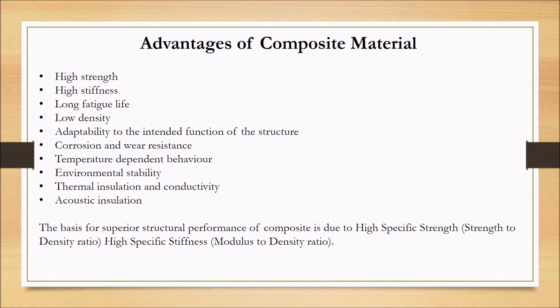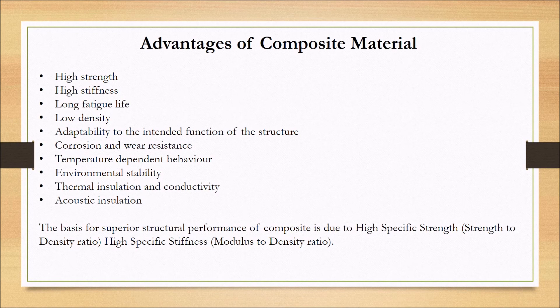Now let us see the advantages of composite materials. They have high strength (high load-carrying capability), high stiffness (the extent to which an object resists deformation in response to applied load), long fatigue life (material strength during cyclic loading), low density, and adaptability to intended function — that is, achieving required properties based on loading direction. Composites are also corrosion resistant, wear resistant, and have temperature-dependent behavior and environmental stability.